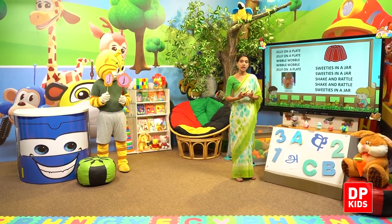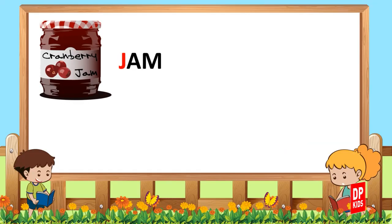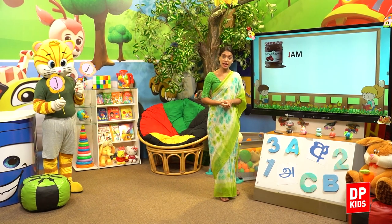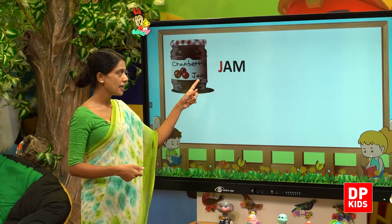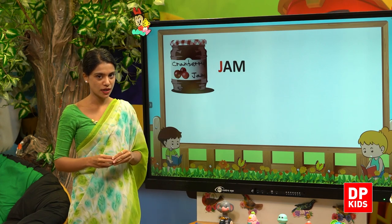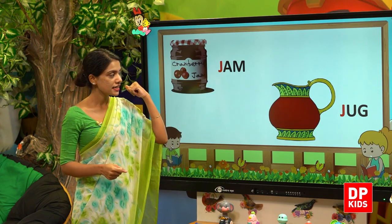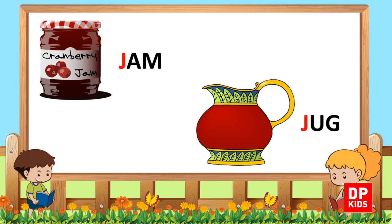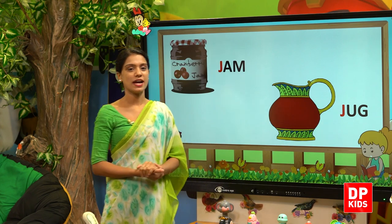Now let us look at some words and pictures that start with letter J. The first one is jam — tasty jam! We can see a variety of jam, isn't it? J-A-M, first letter J, the sound is J.